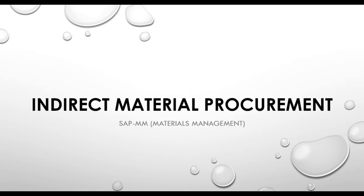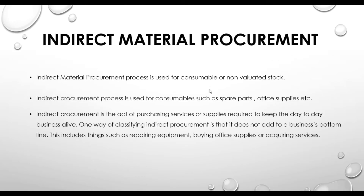This is our first video on indirect material procurement cycle in SAP. This video is an introduction to the indirect material process. Indirect material procurement is used for consumable or non-valuated stock, such as spare parts and office supplies. It is the act of purchasing services or supplies required to keep day-to-day business alive.